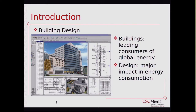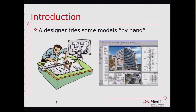The way it's done nowadays is that a designer simply tries some models by hand. Of course, they use a computer to make these designs, but they have to actually sit and make designs manually. Some of these designs can be evaluated — there are tools like Green Building Studio to estimate how much energy a building is going to consume. But the number of designs that a human can try by hand and explore is very limited.